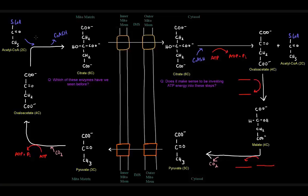Problem: it doesn't cross the mitochondrial membranes. Oxaloacetate, a four-carbon molecule, also doesn't cross the mitochondrial membrane. However, when you link these two together to make citrate, you create a six-carbon molecule that can cross. It's got a little transport protein that allows it to flow out into the cytosol.